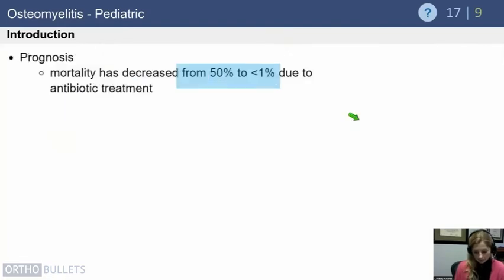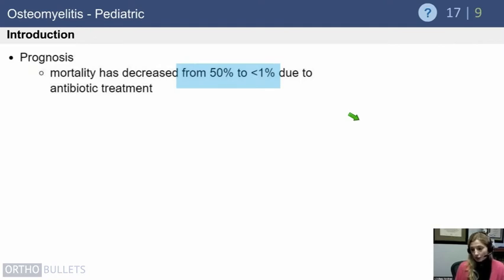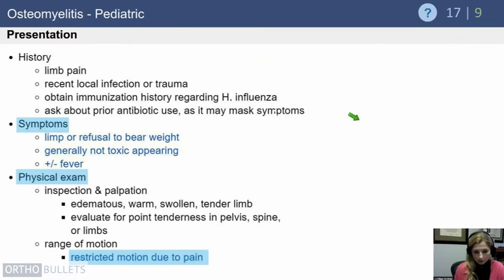The mortality from osteomyelitis, fortunately, has decreased from 50% to less than 1% with antibiotic treatment. However, deaths do still occur — usually in cases where the diagnosis was missed and the condition progressed too far before intervention.